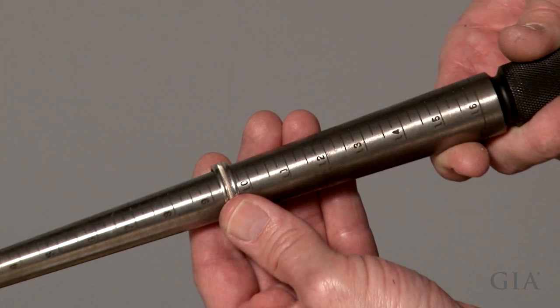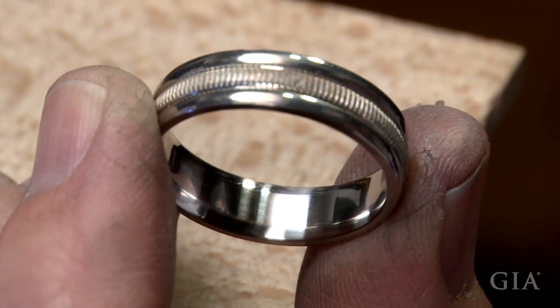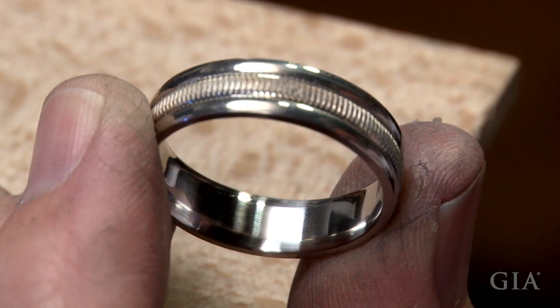The band shows as a size nine and a half on the mandrel, but because the inside of the band has a convex shape it will fit like a size nine and three-quarters.